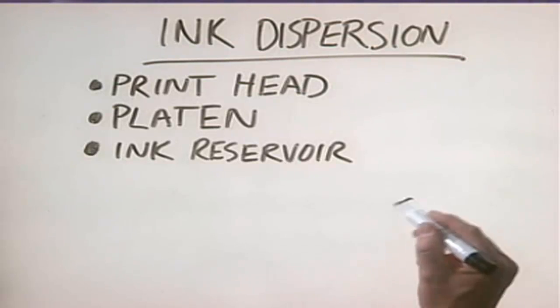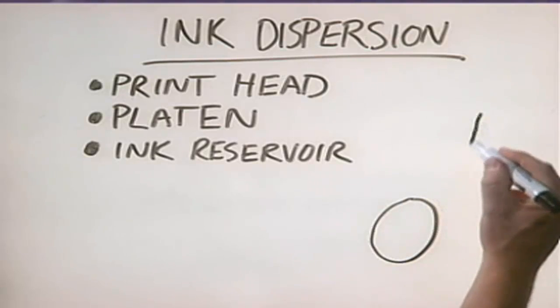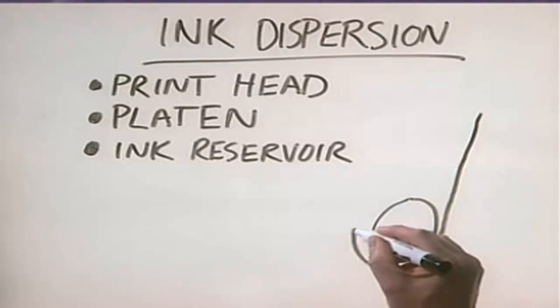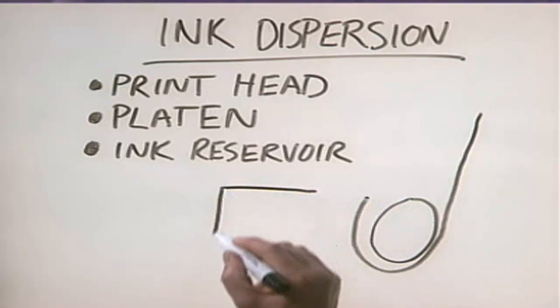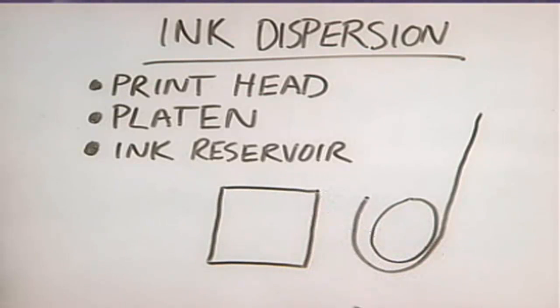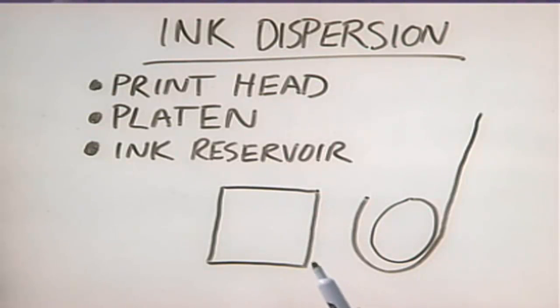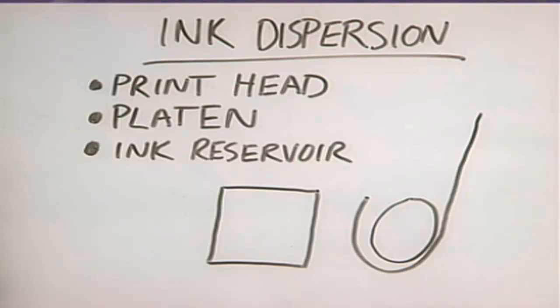The next type of printer we want to talk about is called an ink dispersion or inkjet printer. In the last ten years, inkjet printers have become very popular — they create really high quality output and they don't cost a whole lot. Just like with a dot matrix printer, we have a platen and we use a form feeder to pull a piece of paper through. Unlike a dot matrix printer, which uses continuous feed paper, an ink dispersion printer uses cut sheets of paper, just like you would use for a copy machine.